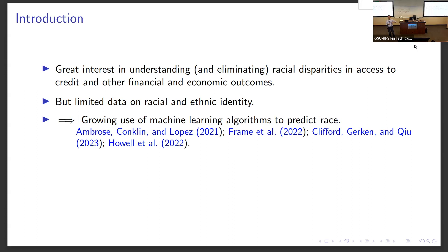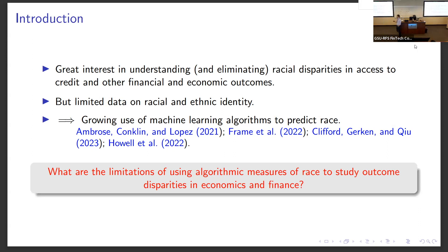In this literature, while there is some recognition that measurement error in these predicted race classifications can introduce bias into our estimates of disparities, we still don't have a really great understanding of how much of an issue this can be, in what kind of settings, for what kind of purposes, and what research questions. This paper tries to think more carefully about how much measurement error there is and what the implications are for measuring disparities and understanding their drivers.